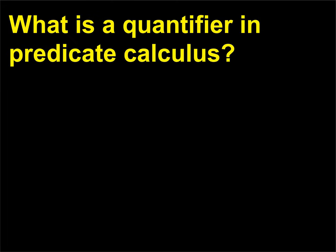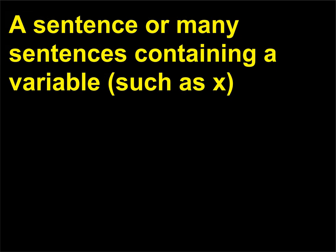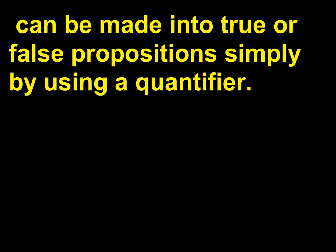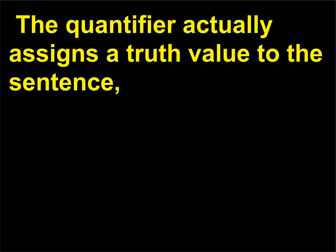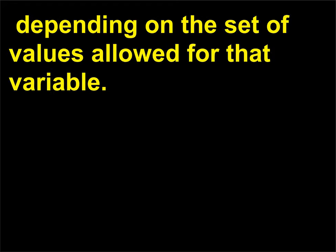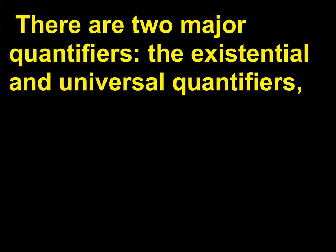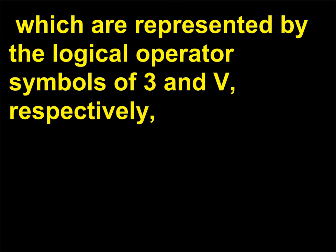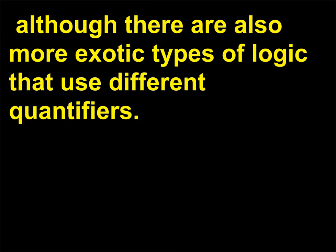What is a quantifier in predicate calculus? A sentence or many sentences containing a variable, such as x, can be made into true or false propositions simply by using a quantifier. The quantifier actually assigns a truth value to the sentence, depending on the set of values allowed for that variable. There are two major quantifiers: the existential and universal quantifiers, which are represented by the logical operator symbols ∃ and ∀, respectively. Although there are also more exotic types of logic that use different quantifiers.